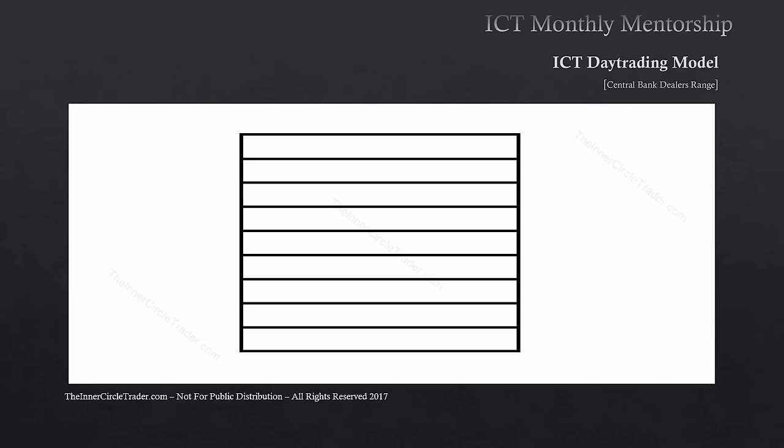The central bank dealers range is a specific time of day we're going to teach in this lesson. For now, I want you to think about ranges in terms of a predefined high and low. We're going to say the central box here represents the central bank dealers range. We have to know conceptually that if there's a range deemed a specific important range in price, that range height from high to low, based on two different types of parameters, can be reproduced or replicated in the form of a standard deviation.